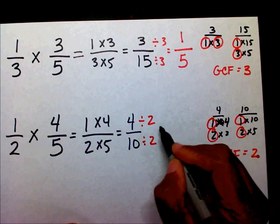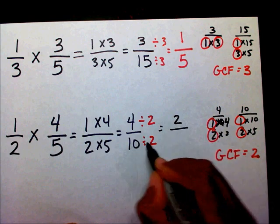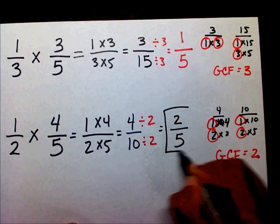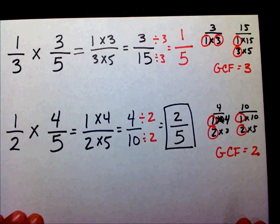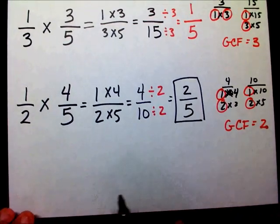And that's going to give me an answer of two divided by two is two. Ten divided by two is five. So this is my final answer. I would like for you to try one now.